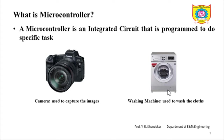Similarly, a washing machine is also used for a specific task or application — that is, to wash clothes. Now, the question is: can we use the camera to wash clothes? The answer is no. So these are specialized embedded devices designed to do a specific task.